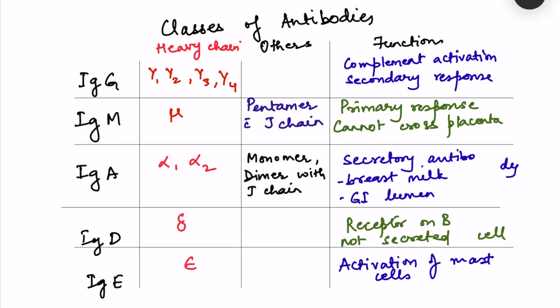There are five classes of antibodies — remembered as GAMDE. IgG has gamma heavy chains (gamma 1, 2, 3, or 4), is produced in the secondary response, and is very effective at complement activation. IgM has mu heavy chains and is involved in the primary response.